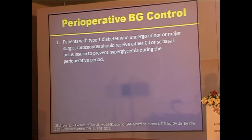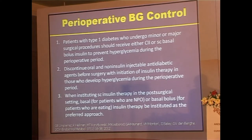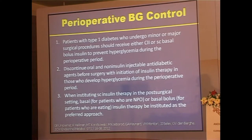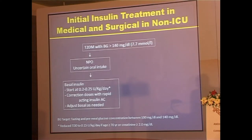You need to be most careful in hospital when the person is type 1 diabetic undergoing a major surgical procedure — give an insulin drip or basal-bolus to prevent hyper- and hypoglycemia perioperatively. Discontinue oral and non-insulin injectable anti-diabetic agents and initiate insulin therapy in patients who develop hyperglycemia. Institute subcutaneous therapy post-surgically: basal insulin only for those nil by mouth, basal-bolus for those eating. In medical or surgical non-ICU type 2 patients with glucose above 120 and uncertain oral intake, start basal insulin at 0.2–0.25 units/kg/day, reduced to 0.5 units/kg/day if age over 70 or creatinine above 2.